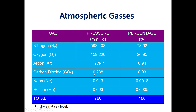In this image, we see the partial pressures and total atmospheric pressure of 760 mmHg. This is for dry air at sea level.